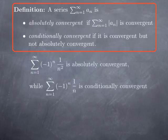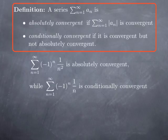We've already seen examples distinguishing these two notions. The series of (-1)^n * 1/n² is absolutely convergent, as we just saw. While the series of (-1)^n * 1/n is conditionally convergent.